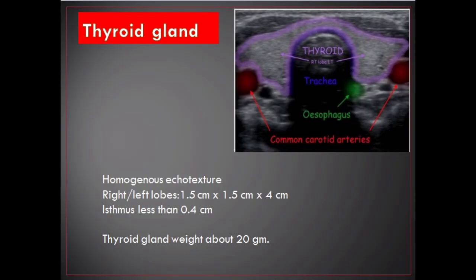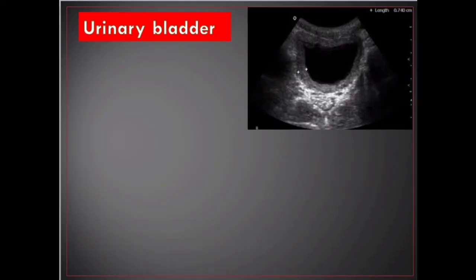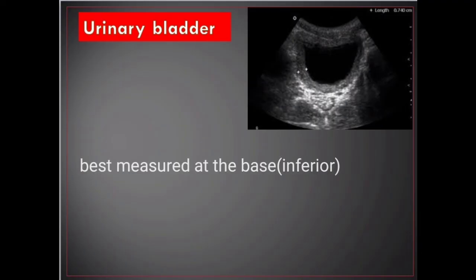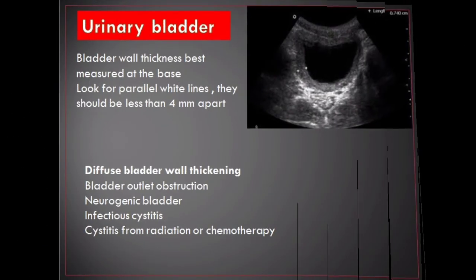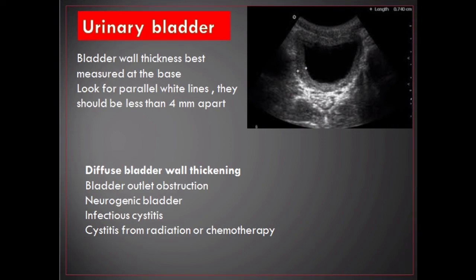Urinary bladder. Bladder ultrasound is non-invasive, readily accessible, and easy to use. Bladder wall thickness is best measured at the base; look for parallel white lines that should be less than 4 millimeters apart. Causes of diffuse bladder wall thickening include: bladder outlet obstruction, neurogenic bladder, infectious cystitis, and cystitis from radiation or chemotherapy.